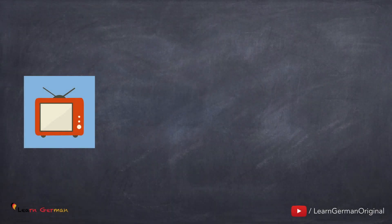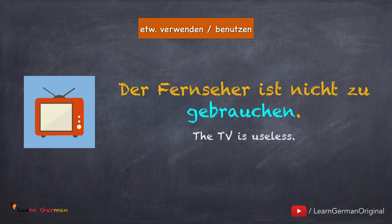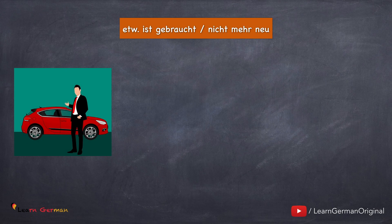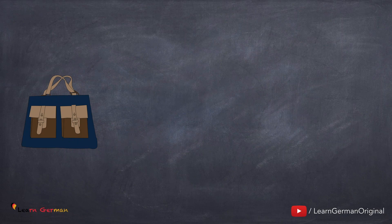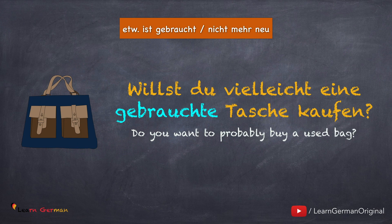Der nächste Satz ist in Passiv: Der Fernseher ist nicht zu gebrauchen — oder den Fernseher kann man nicht gebrauchen oder benutzen. Wie schon erwähnt, hier kann man auch das Verb brauchen benutzen. Brauchen und gebrauchen — beide Verben können etwas verwenden oder benutzen bedeuten. In dem nächsten Satz benutzt man gebraucht als Adjektiv, wenn etwas nicht mehr neu ist. Zum Beispiel, dieses Auto ist gebraucht — man kann ein neues Auto oder ein gebrauchtes Auto kaufen. Zweites Beispiel: Willst du vielleicht eine gebrauchte Tasche kaufen?